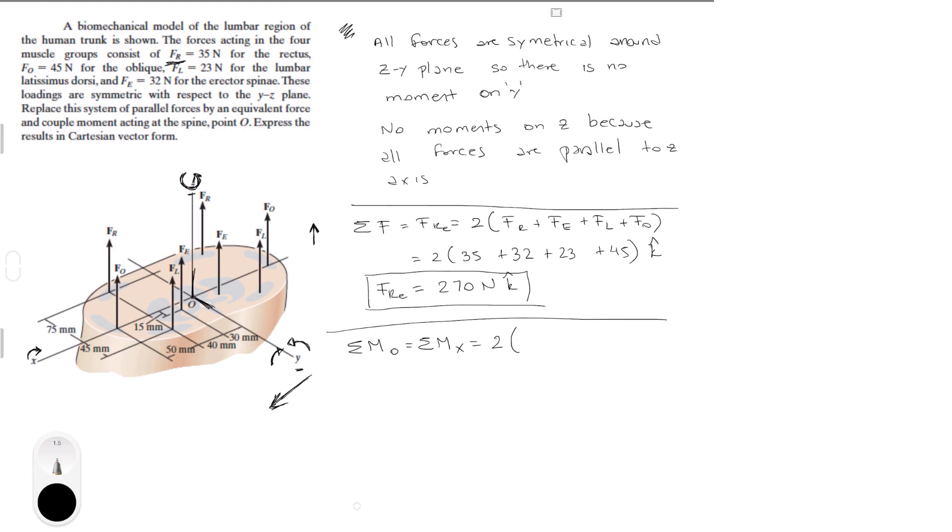And that is equal to, I'm going to only do again the left and just multiply by two. So two times, and now you got to calculate the distances between each force and the x-axis. For example this would be r_R. Now r_O is zero because it's sitting right on top of the x-axis and it's not creating any moment. This distance right here is r_L, this distance is r_E.